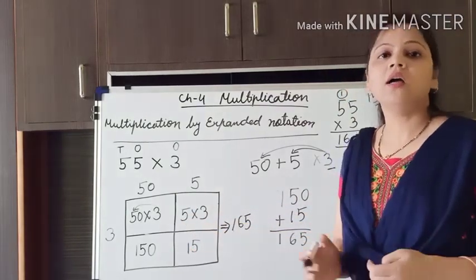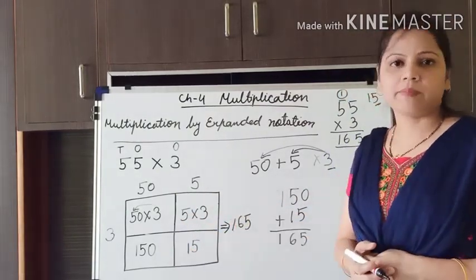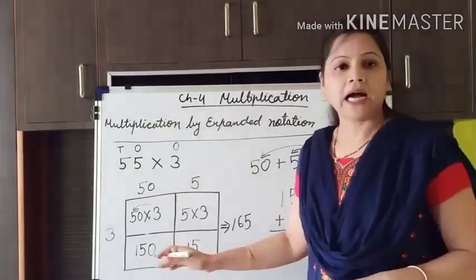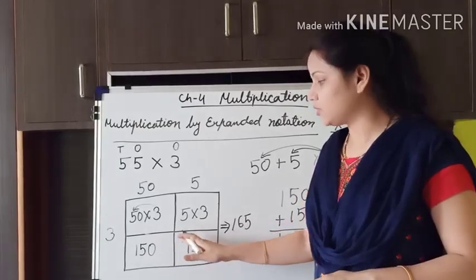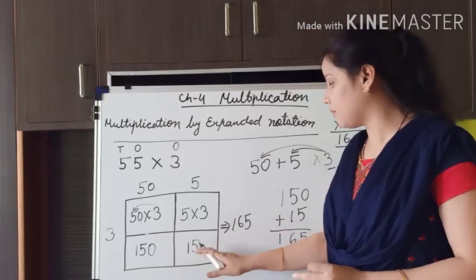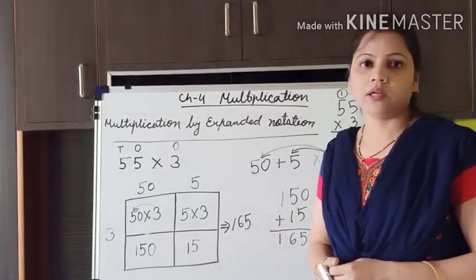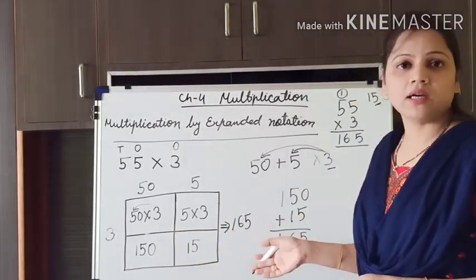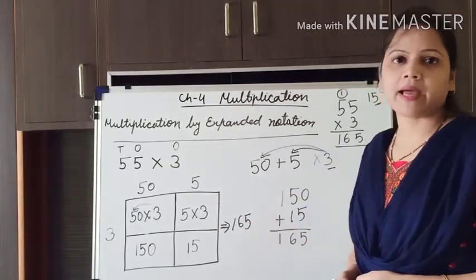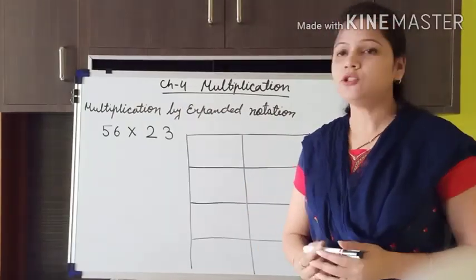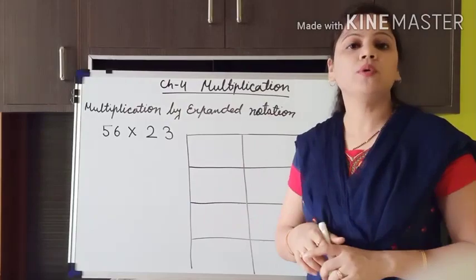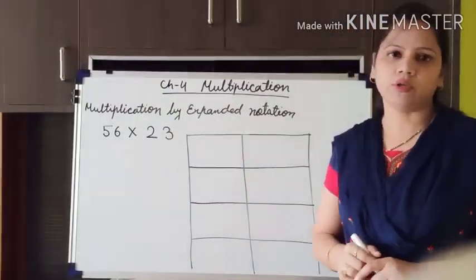Like this you have to do the multiplication by expanded notation: first break the numbers, then multiply, then add the numbers you got to find the product. Hopefully this topic is very clear to you. Just pause this video and write this example in your maths notebook. Now we will learn to multiply a 2-digit number by a 2-digit number by expanded notation.